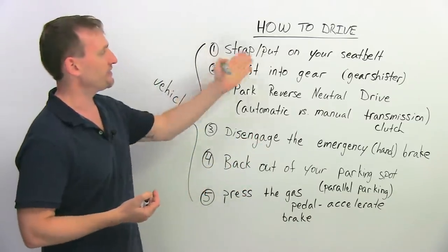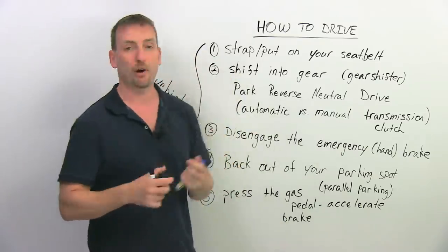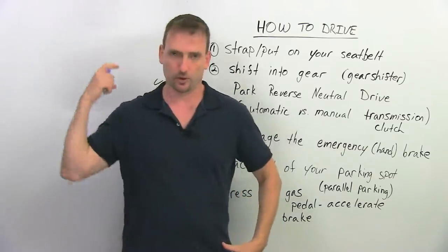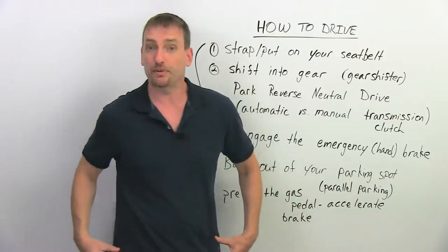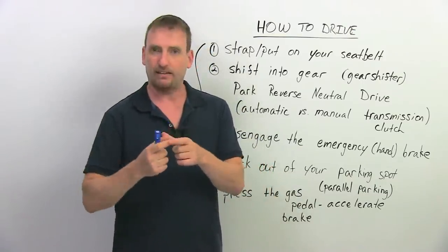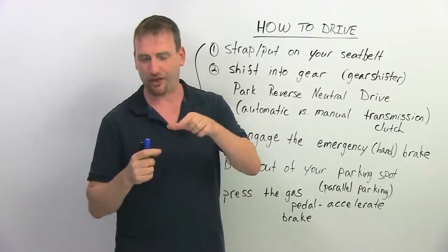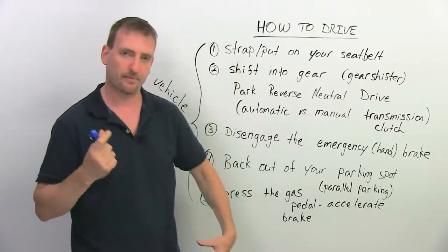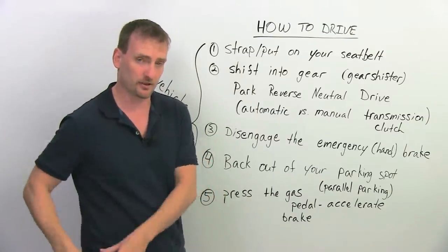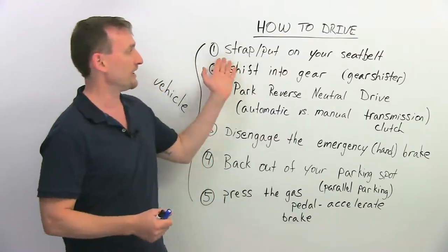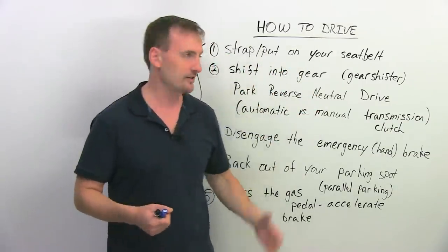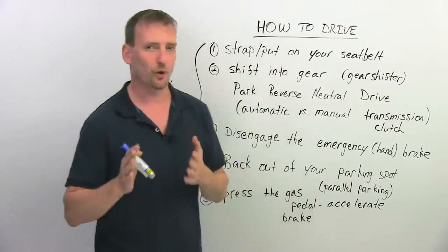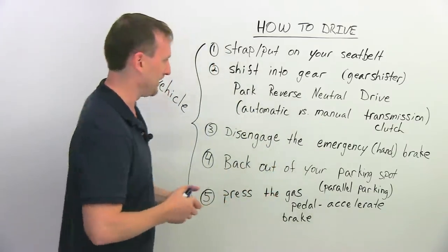So the first thing you want to do when you get into your car is strap on your seatbelt. The seatbelt goes from your shoulder to your hip and then across your waist, from hip to hip. That belt, that string, the thick one, we call this a strap. We call it a seatbelt, but we also call it the strap, and then you have the buckle that you snap into place. Very important. Don't drive without putting on your seatbelt or strapping it on.